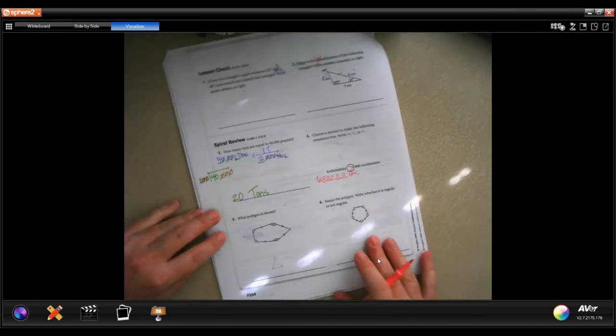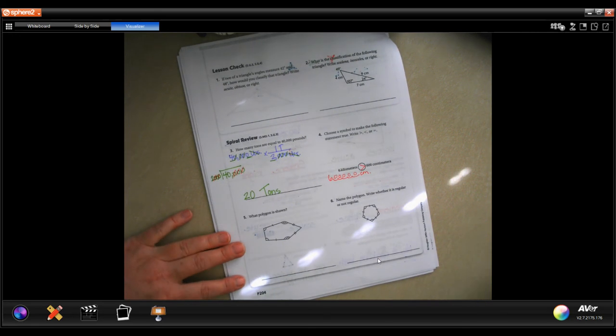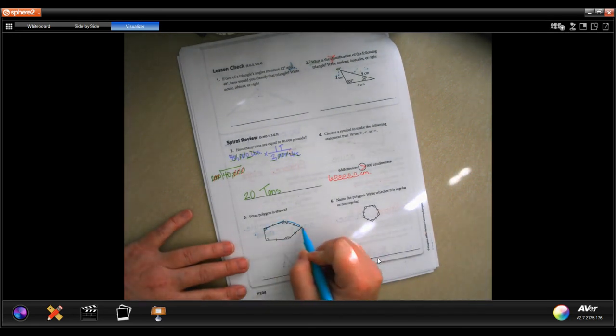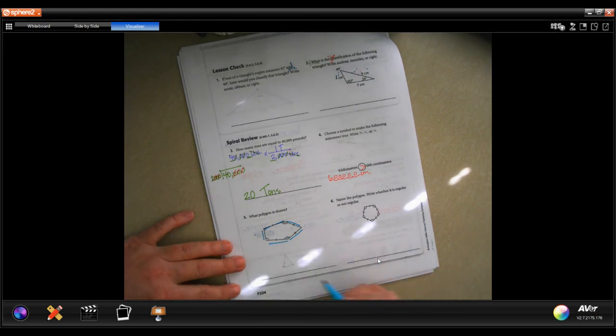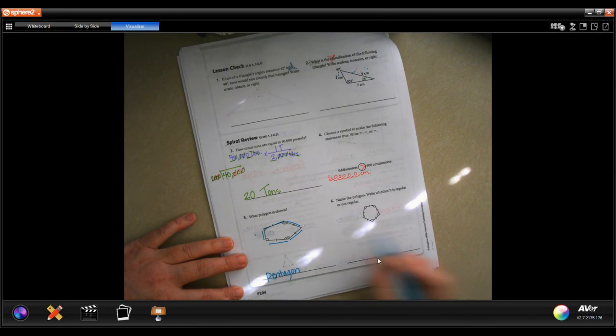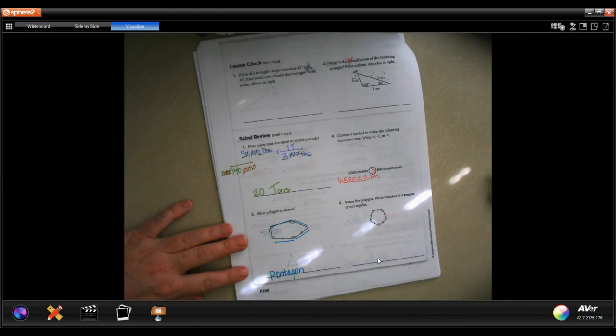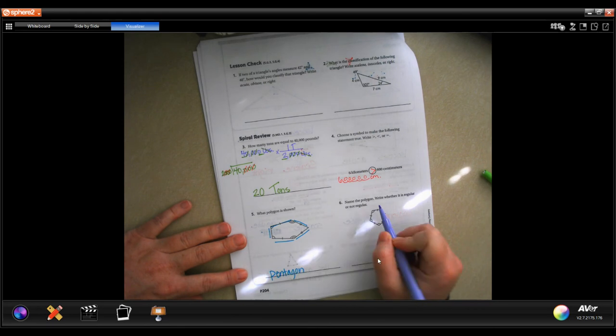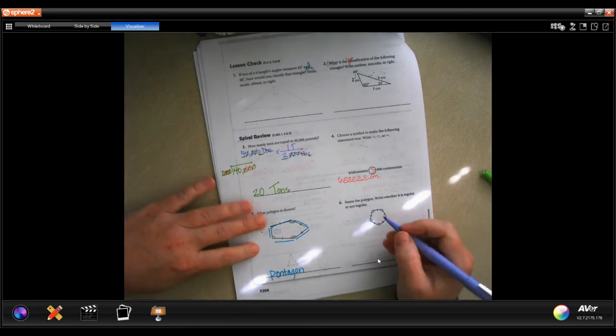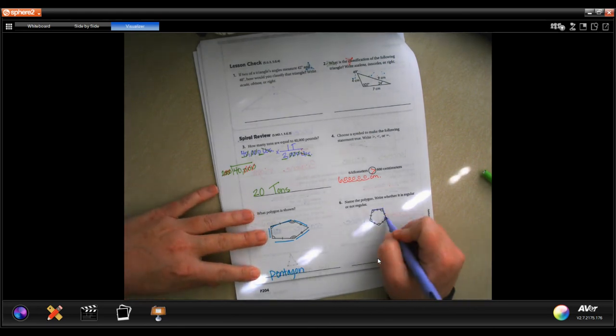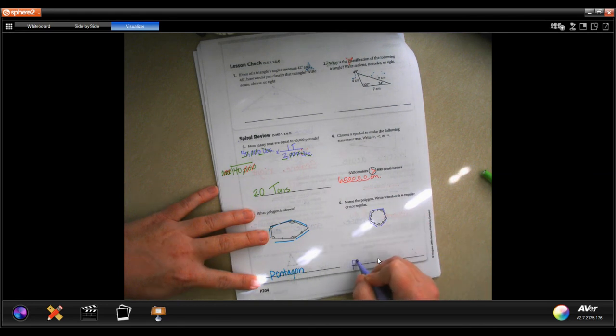What polygon is shown? Well, it has one, two, three, four, five sides, making it a pentagon, just like the building in Washington, which is why it's called the Pentagon. Name the polygon and write whether it is regular or not regular. It too has one, two, three, four, five sides, making it a pentagon. And because there is a normal name for it, it is regular.